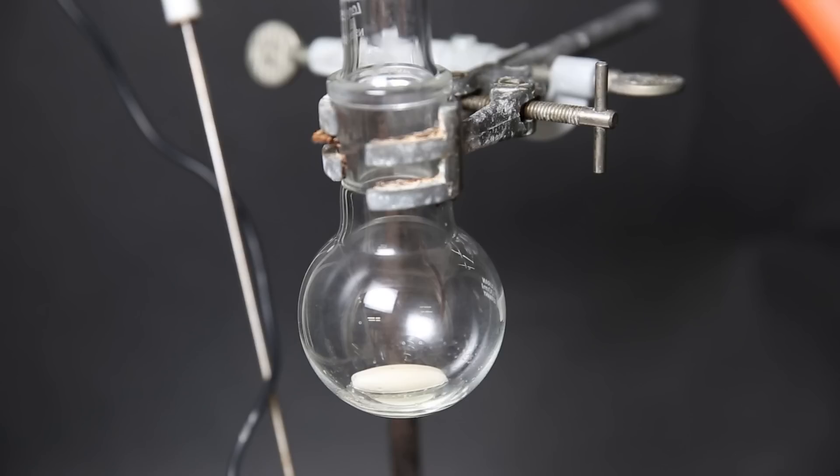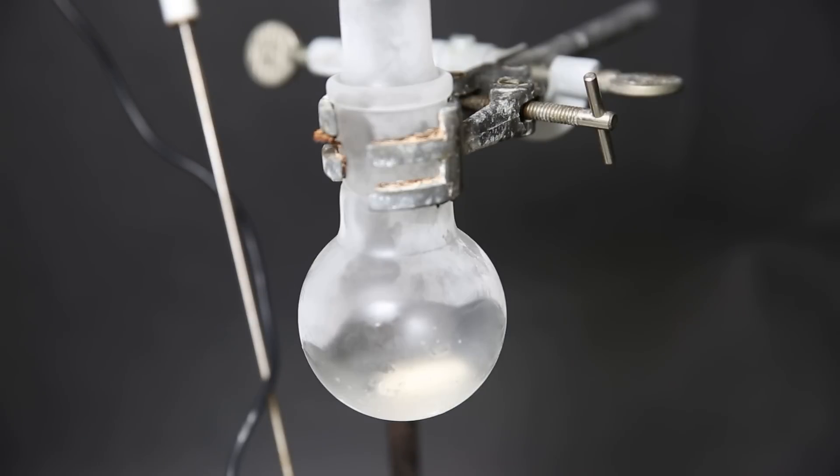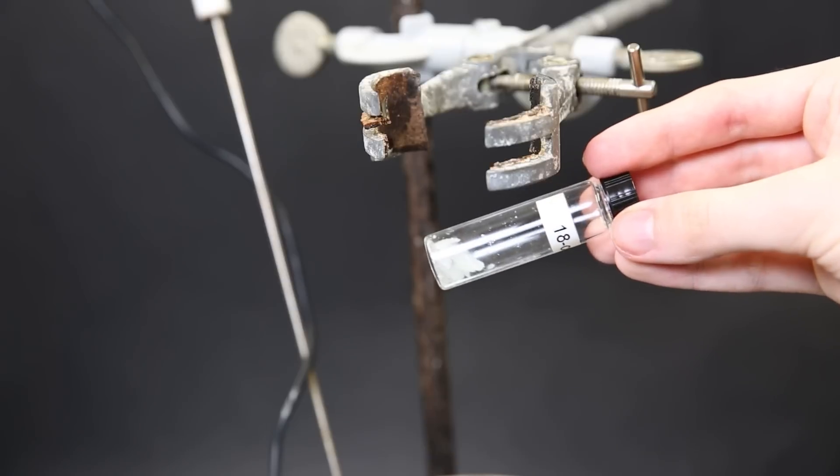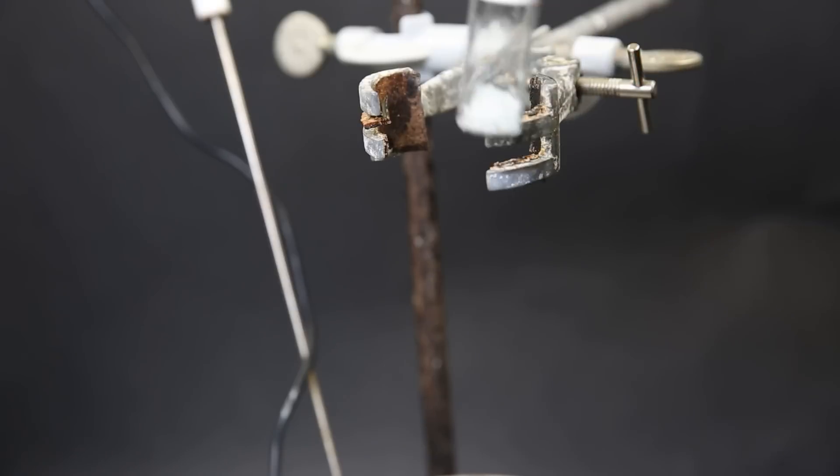Afterward, a clear liquid is left behind, which should be pure 18-crown-6. Even when cooled to room temperature, it again doesn't solidify because it is supercooling. So I put it in the freezer at minus 23°C to force it to solidify. After this it has solidified, and I transferred all of it to a vial. So in this vial, we should have the pure 18-crown-6.